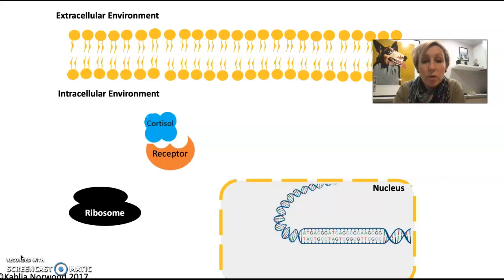It's simple diffusion, moves across the plasma membrane and binds to an intracellular receptor, reinforcing the idea that this is a hydrophobic molecule. Once cortisol has entered and bound to that receptor, it will induce a conformational change in the receptor.